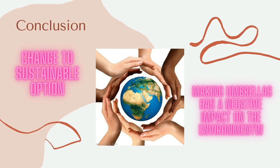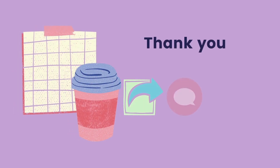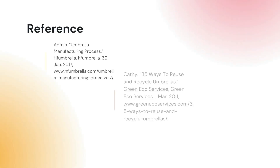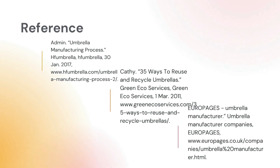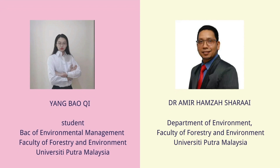Finally, for the conclusion, the life cycle of umbrellas has many negative effects on the environment, such as air pollution. The change to a sustainable option would be to use more environmentally friendly materials for umbrellas, at least in the choice of fabric. That's all for today — don't forget to click, comment, and share. Thank you so much for watching.